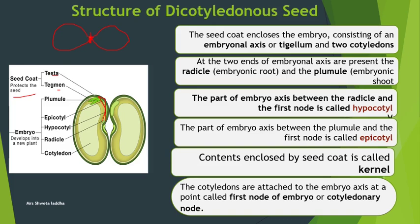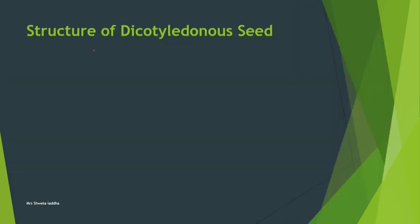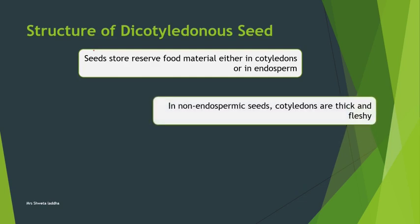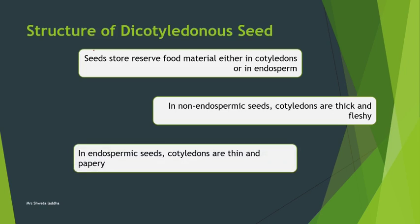Above the cotyledonary node arises the epicotyl, which gives rise to the plumule, and below arises the hypocotyl, which gives rise to the radicle. The embryonic axis is also called the tigellum. Dicot seeds store reserve food either in the cotyledons if non-endospermic, or in the endosperm if endospermic. In non-endospermic seeds, cotyledons become thick and fleshy as in pea, bean, gram, and moong. In endospermic seeds, the cotyledons are thin and papery, as in castor and tamarind.